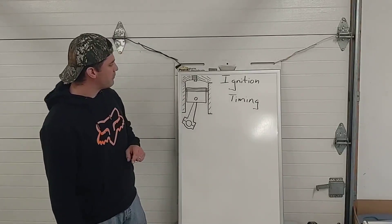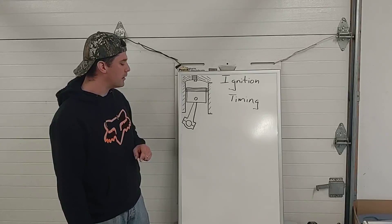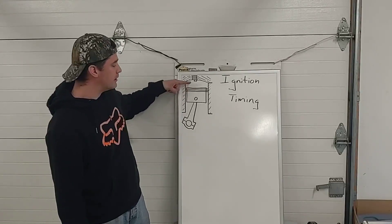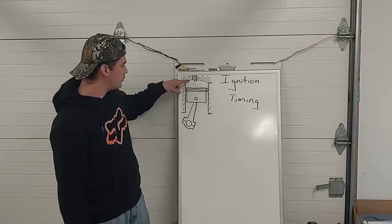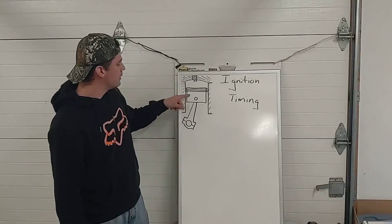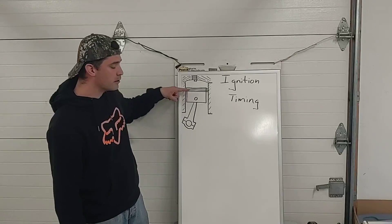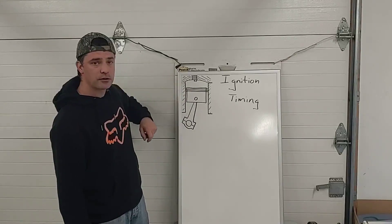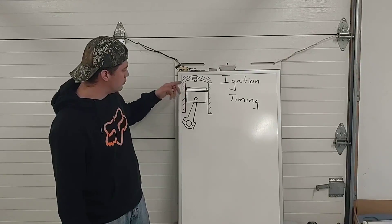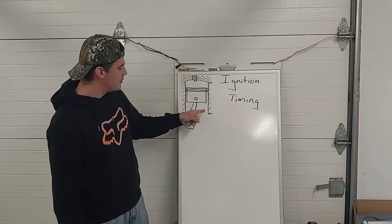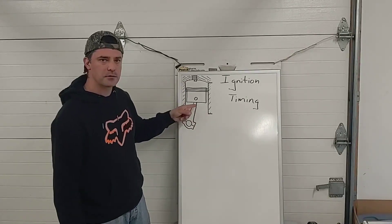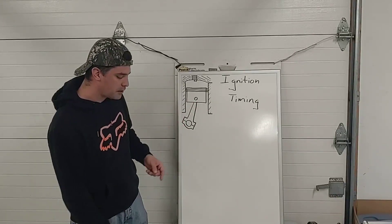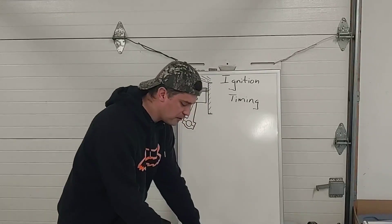When we're referring to ignition timing in the engine, what we're actually referring to is where the piston is in the cylinder when the ignition event occurs — when the spark actually happens. Since we can't be in the cylinder while the engine is operating, we look at things on the outside of the engine. We refer to piston position by degrees of crankshaft rotation — by where the crankshaft is in its revolution.